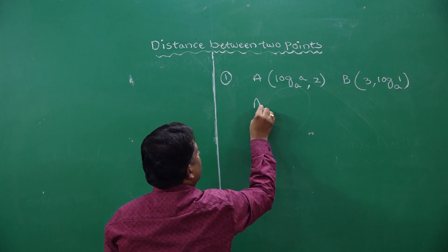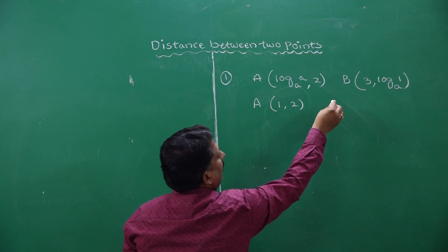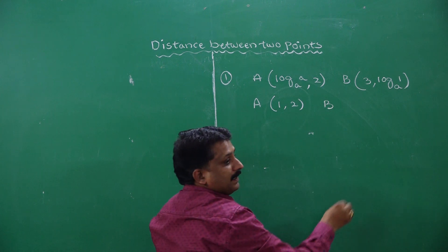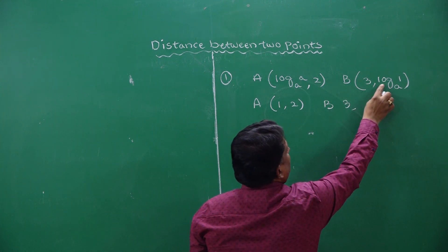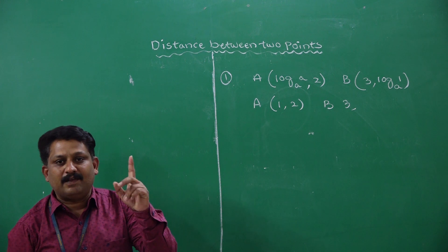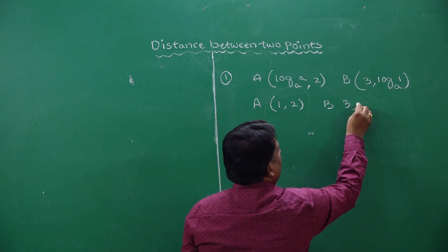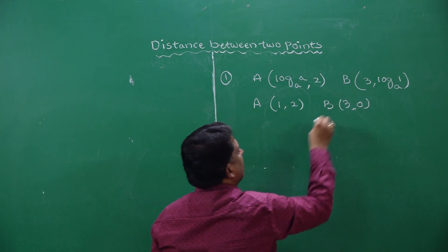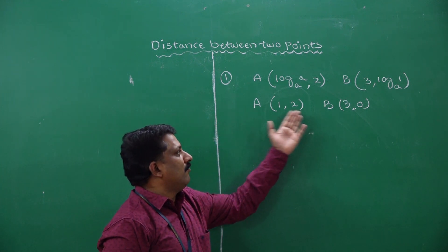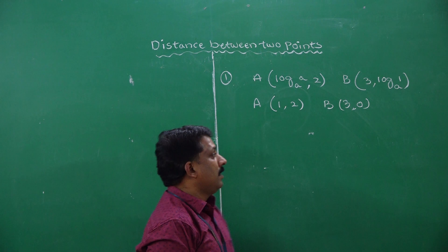So this point becomes A(1, 2). And for point B(3, log 1 to the base A), log 1 to the base A value is 0. So I need to find out the distance between these 2 points: A(1, 2) and B(3, 0).